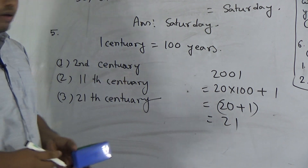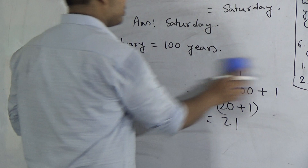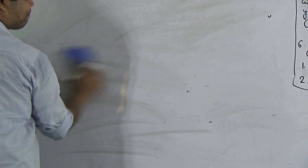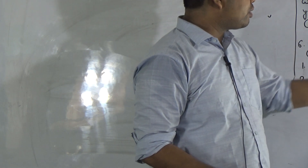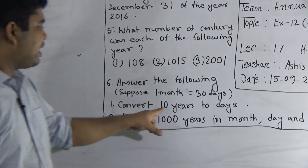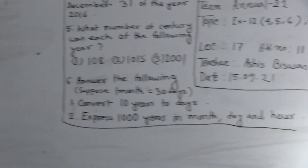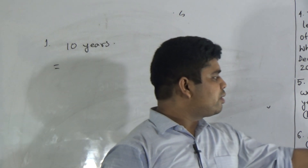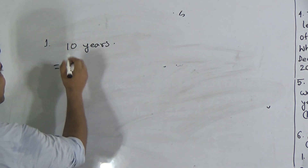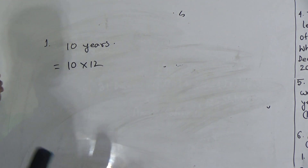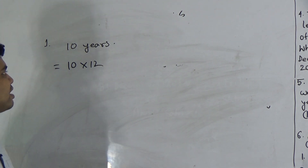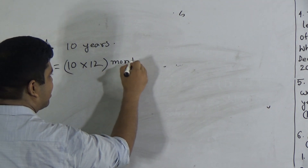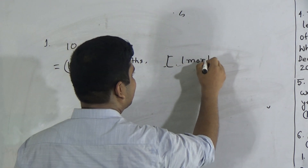Which century is going on now? It is the 21st century. Question numbers 4 and 5 are done. Next, question number 6: answer the following questions. The hint given is one month equals 30 days. Part one: convert 10 years into days. Since one month equals 30 days, we first convert years into months — 10 years × 12, because one year equals 12 months.